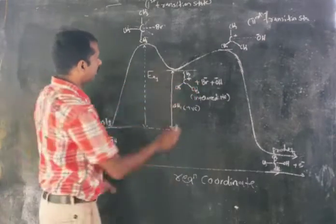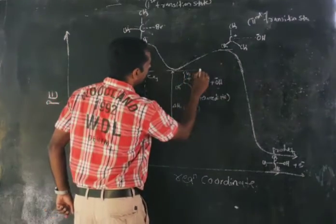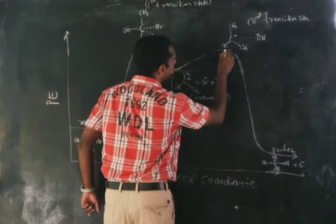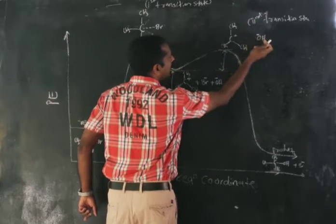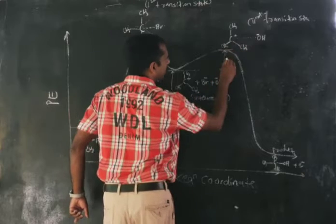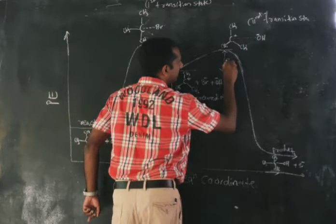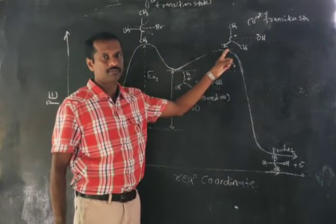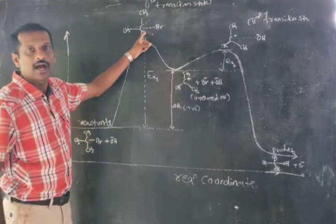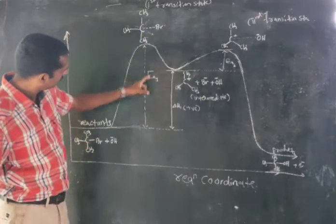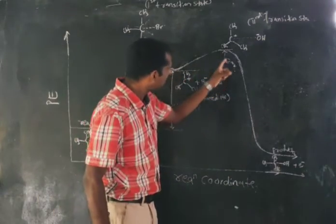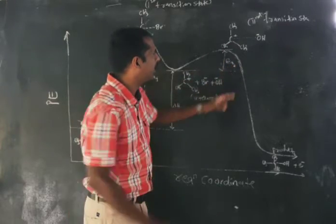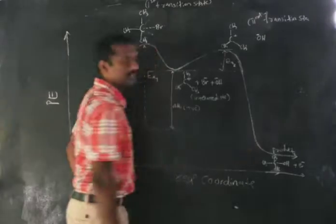The intermediate is taken to the next transition state by attack of the nucleophile. The energy required for that is the second activation energy, EA2. EA1 is the energy from reactants to the first transition state, and EA2 is the energy from the intermediate to the second transition state.